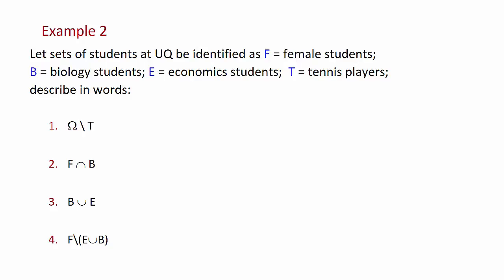The first case we've got Ω \ T. Well the first thing we've got to work out what omega is, that's our universal set. In this case we have students at UQ so that's our omega. So students at UQ who do not play tennis will be a reasonable interpretation of number one.